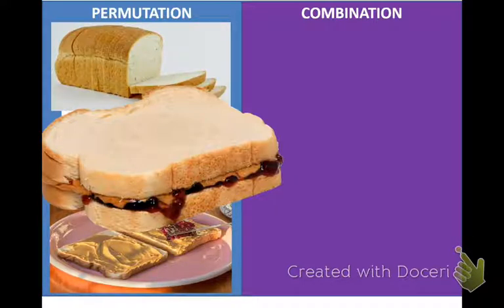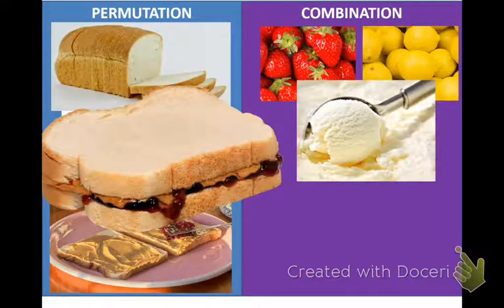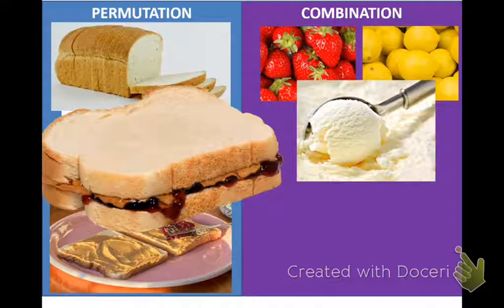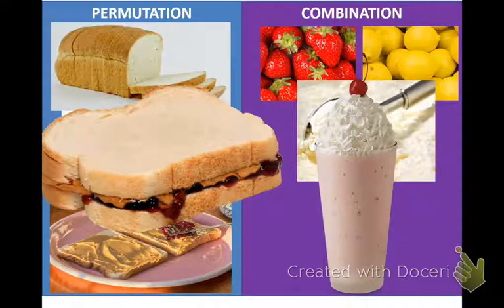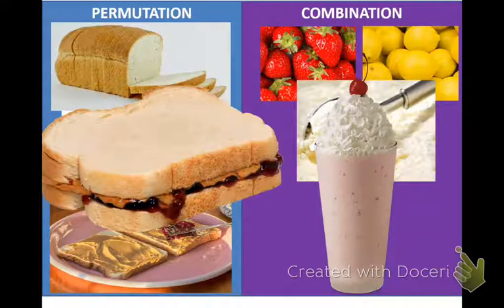My favorite has strawberries, lemon, and ice cream. It's called a lemon berry because it has lemon and strawberry. You throw it all into the blender and blend it, and out comes a beautiful shake. Combinations are grouped — it's not an order of any sort. How many groups of three could I make out of this class? Does it matter what order I choose you in? No. It's just a group.